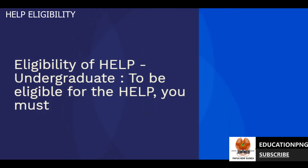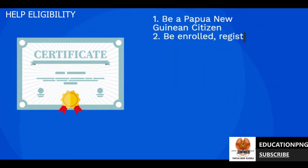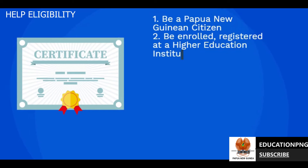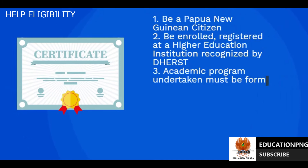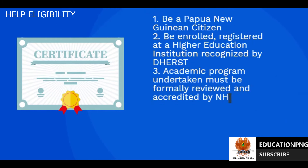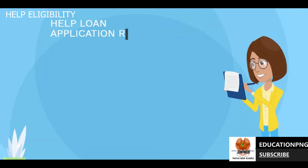Eligibility of HELP — Undergraduate: To be eligible for the HELP, you must: 1. Be a Papua New Guinean citizen. 2. Be enrolled and registered at a higher education institution recognized by DHERST. 3. The academic program undertaken must be formally reviewed and accredited by NHTE.